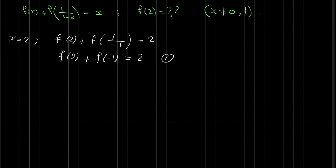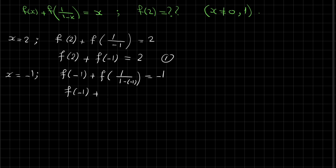This is the first equation: f(2) + f(-1) = 2. Now we also have f(-1) here, so we need to find f(-1). Let's substitute x = -1. Substituting x = -1, we get f(-1) + f(1/(1-(-1))) = -1.